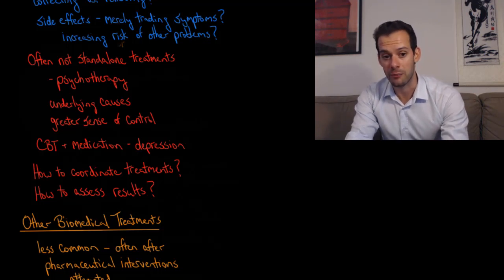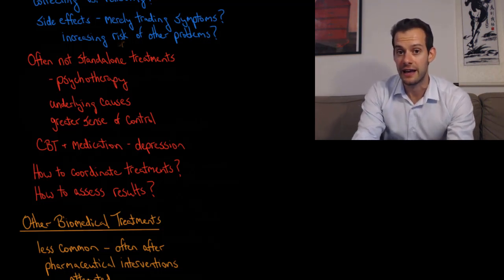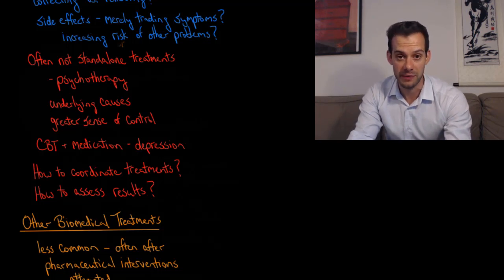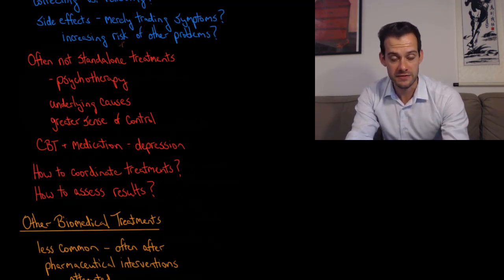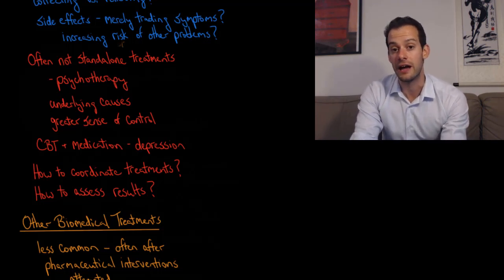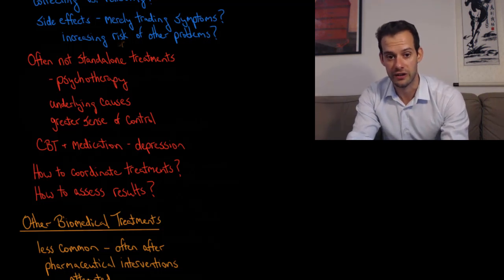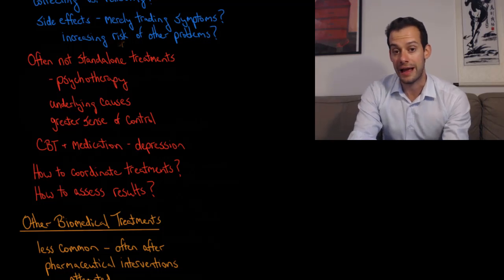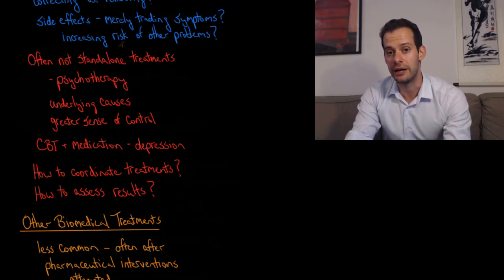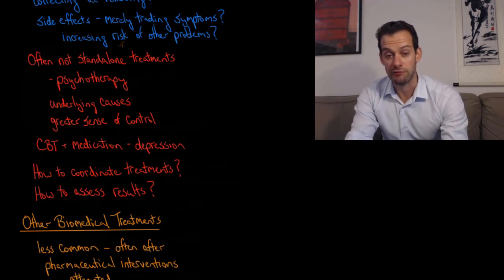One example of this combination is what we see in the treatment of depression. There are studies suggesting that cognitive behavioral therapy can be just as effective as medications like SSRIs for some patients suffering from depression. But these same types of studies also show that the most effective treatment is often a combination of cognitive behavioral therapy plus taking SSRIs. This is a case where we aren't thinking of the drugs as curing the problems—they're an aid to the treatment, but we also need some psychotherapeutic interventions as well.